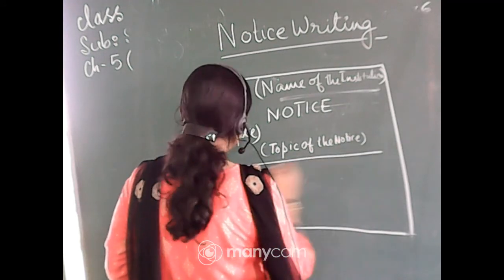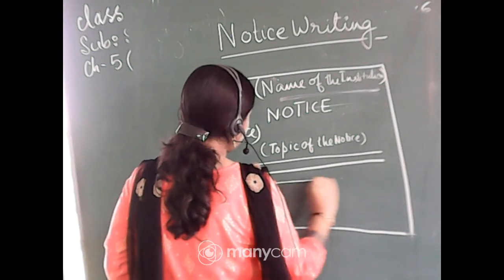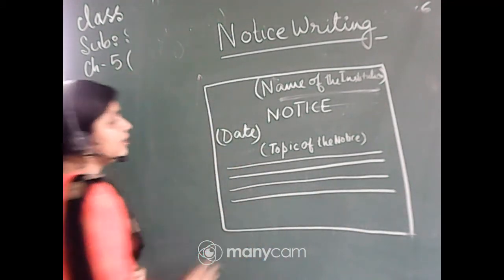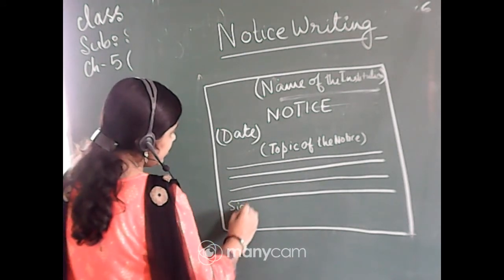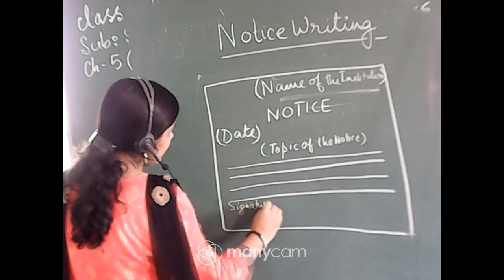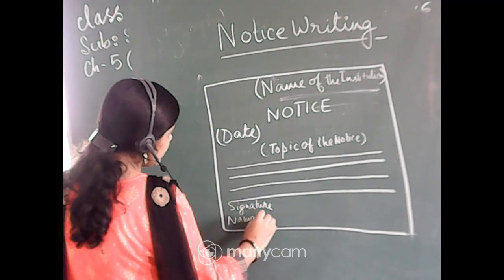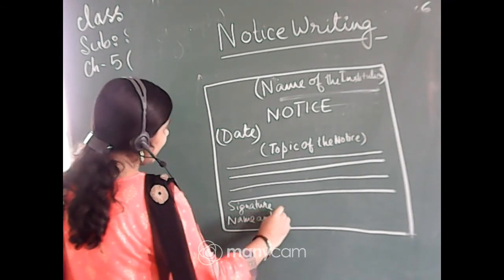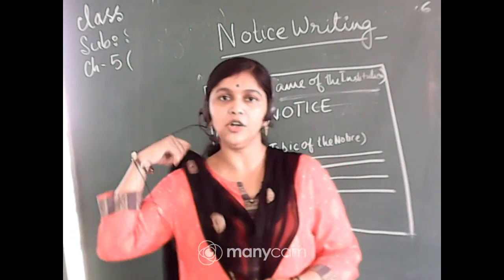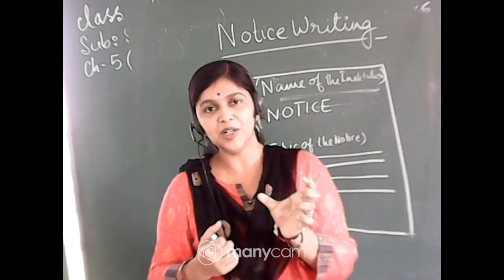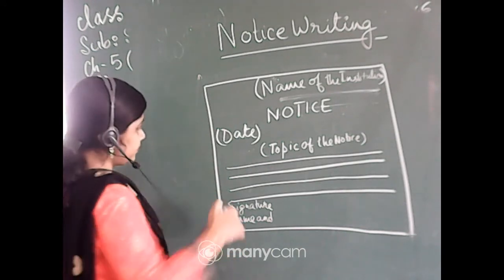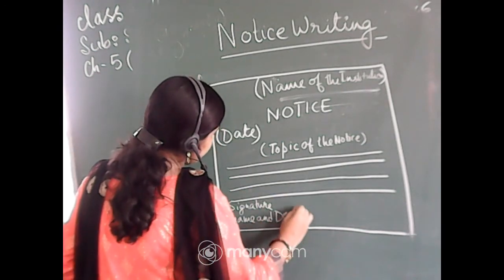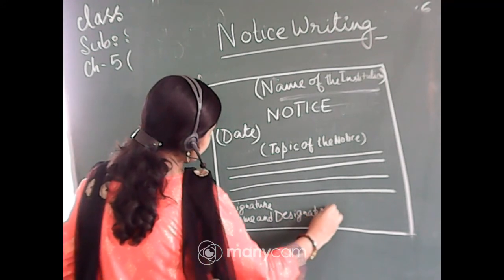Then you will start the body of the notice. And then after you have written the body of the notice, you will write the name. First of all you will write your signature. Signature will be here. And just below it, the name and designation of the person who is writing the notice. Suppose you are writing as the class president or as the cultural secretary of the school, you will write your name in full and then write that cultural secretary. Name and designation, both the things have to be written.